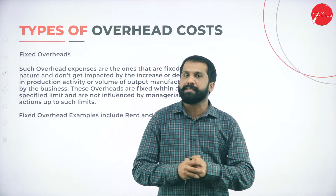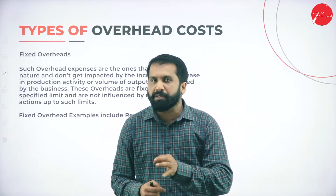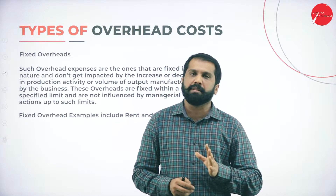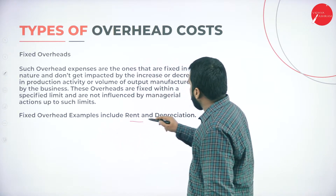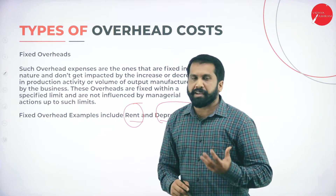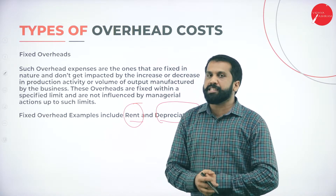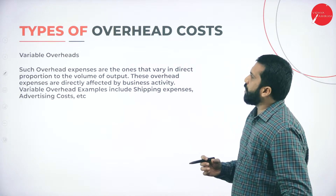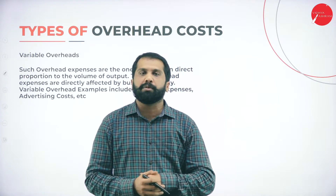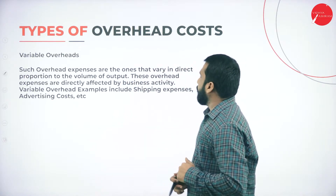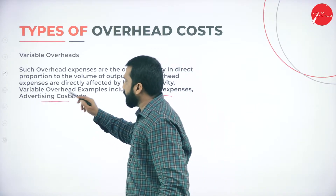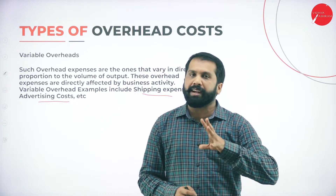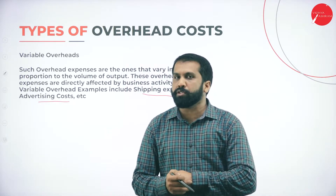Whatever rent I pay for the tuition is called fixed, because whether there is one student or 100 students I have to pay the fixed rent every month. Examples of fixed overhead are rent and depreciation — irrespective of your strength, your business, or your income, you are supposed to pay those fixed charges. Next is variable overhead. Variable overhead varies in nature. For example, they have given shipping expenses and advertisement cost. Now, advertisement cost is not fixed — it depends on the product.